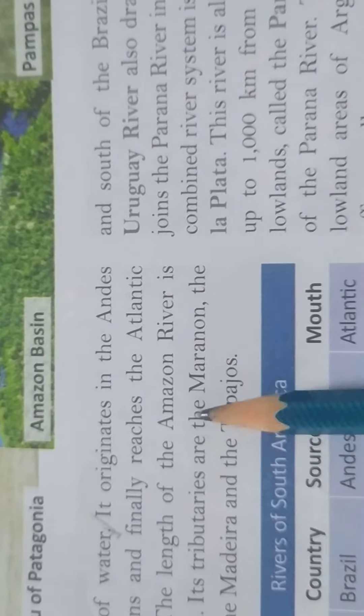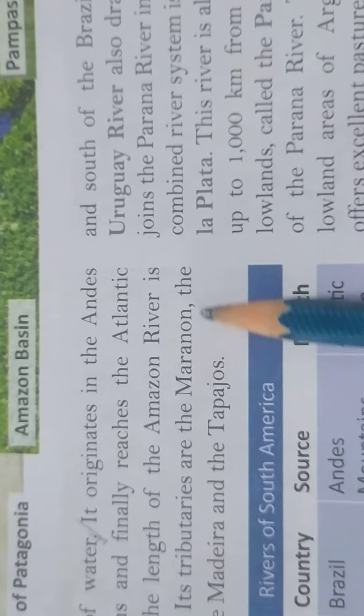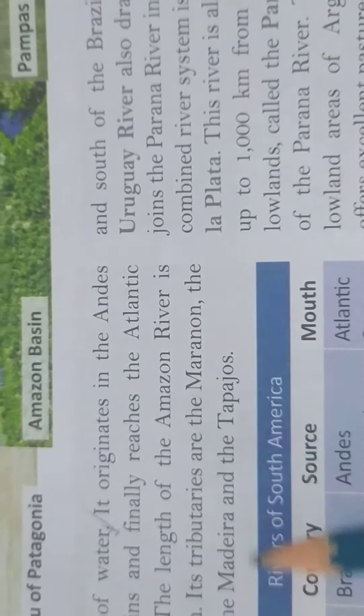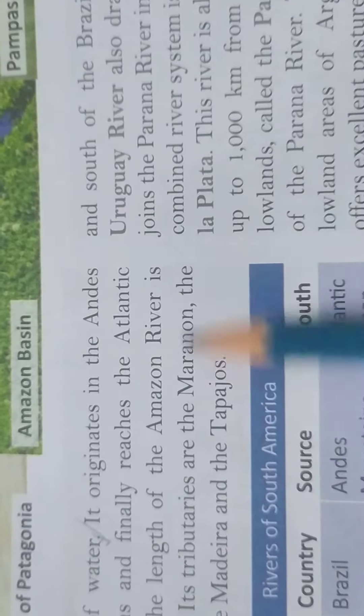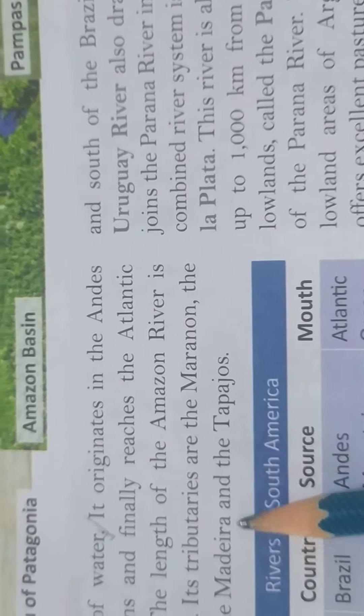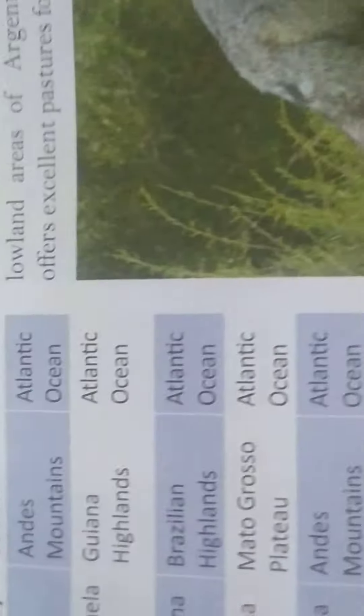Yeh jo Amazon, yeh sab name jo hai, yeh bhoot important hai. Yeh serein cha underline karo, yeh Amazon River ka yeh tributaries hai.